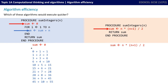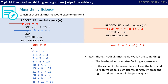On the right, we have a single line of code: sum becomes equal to n times (n plus 1) divided by 2. That's not inside an iterative statement like a for loop — that line of code simply runs once, and that is it. So even though both algorithms do exactly the same thing, the left-hand version takes far longer to execute. If we increase the value of n to a million, the left-hand version would take significantly longer, whereas the right-hand version would be just as quick regardless of what n is.